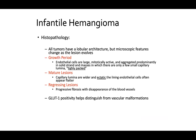On histopathology, infantile hemangiomas have a lobular architecture and the microscopic features change as the lesion evolves. In the growth period, endothelial cells are large, mitotically active, and aggregate in solid strands and masses with only a few small capillary lumina. In mature lesions, the capillary lumina are wider and more ectatic, with flatter lining endothelial cells. In regression, there is progressive fibrosis with disappearance of blood vessels. The key answer for the exam: GLUT1 positivity helps distinguish these lesions from vascular malformations.